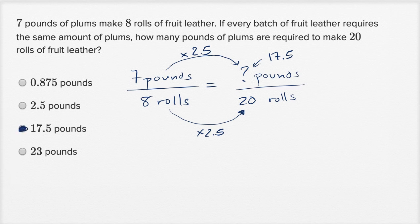And actually, even looking at the choices, you might have been able to get here even without doing this, not too intensive mathematics, because you could say, okay, look, the pounds are kind of close to the amount of leather, but they're less than it. So, we wouldn't want 23 pounds of plums if we make 20 rolls of fruit leather. This is more than 20.